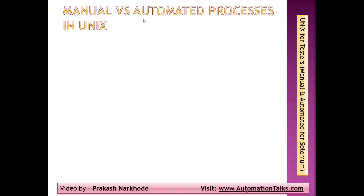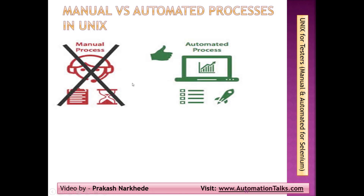What are the manual and automated processes in Unix? If you're working on Unix, you might have some systems that just need to execute a shell script, and based on that shell script something else gets triggered, and you want to verify the outputs of that other system or another script.